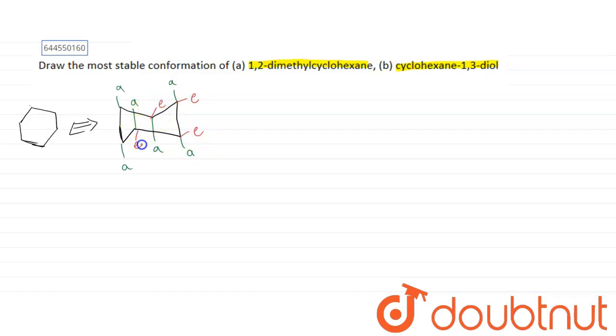So these are equatorial and axial positions. And we always say that the heavier group, heavier groups always tend to occupy the equatorial site. So now we have